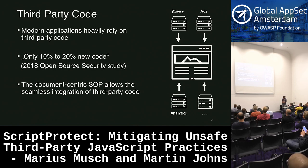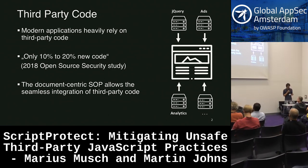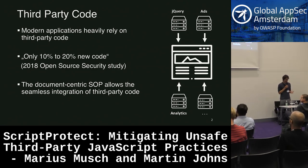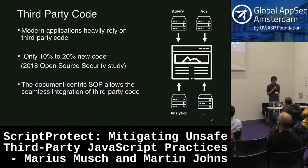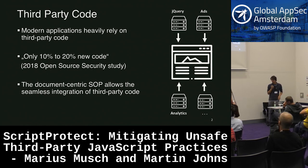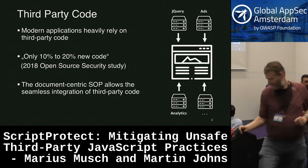I want to talk about third-party code. There was a general study about third-party code and open source security, and they found that developers only write 10 to 20% of new code, and they heavily rely on third-party code. If you would start to write a website, you obviously would use some libraries — there's some popular stuff like jQuery out there. You don't want to reinvent the wheel, so you just take what's available.